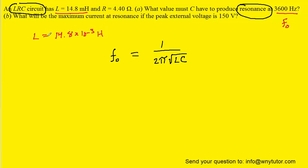What we don't have is the value of the capacitance, and that's actually what part A of this question is asking for. So we want to solve this equation for the capacitance, and one way of doing that would be to place the resonance frequency over 1, and then we can cross multiply.